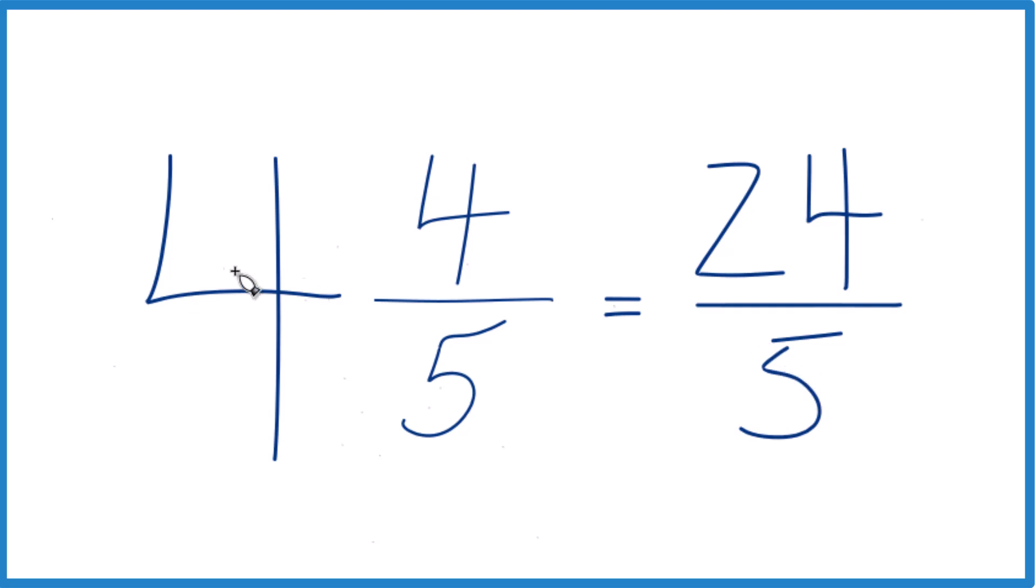Let's do it again. 4 times 5 is 20, 20 plus 4 gives us the numerator, 24. Bring the 5 across, and you got it.